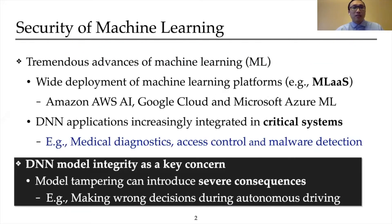In the past decade, there has been a tremendous amount of advances in machine learning. The industry is widely deploying large-scale machine learning platforms such as machine learning as a service from Amazon, Google, and Microsoft. More importantly, due to their superior real-world performance, DNN applications are increasingly integrated into critical systems for decision-making tasks, including medical diagnostics, access control, and malware detection. Apparently, maintaining ML security in many of these systems is extremely important.